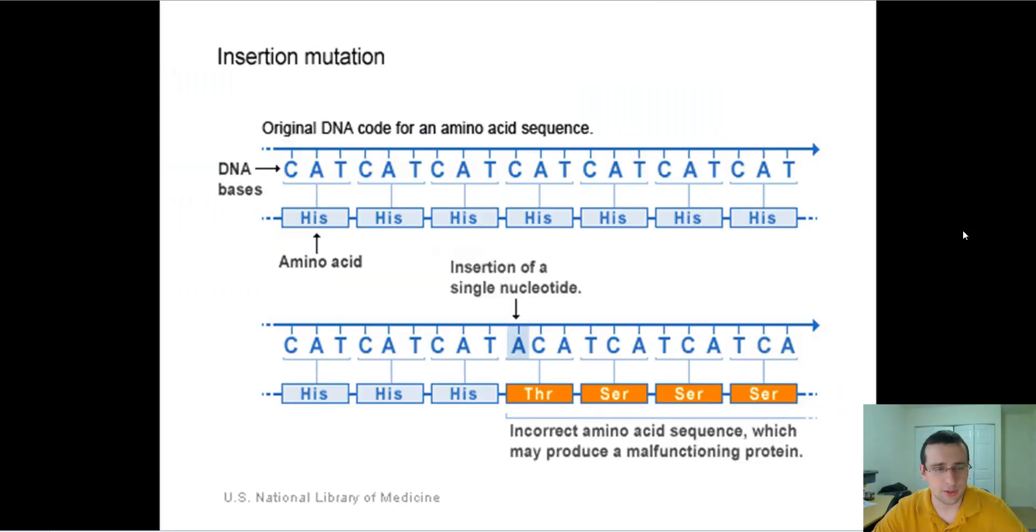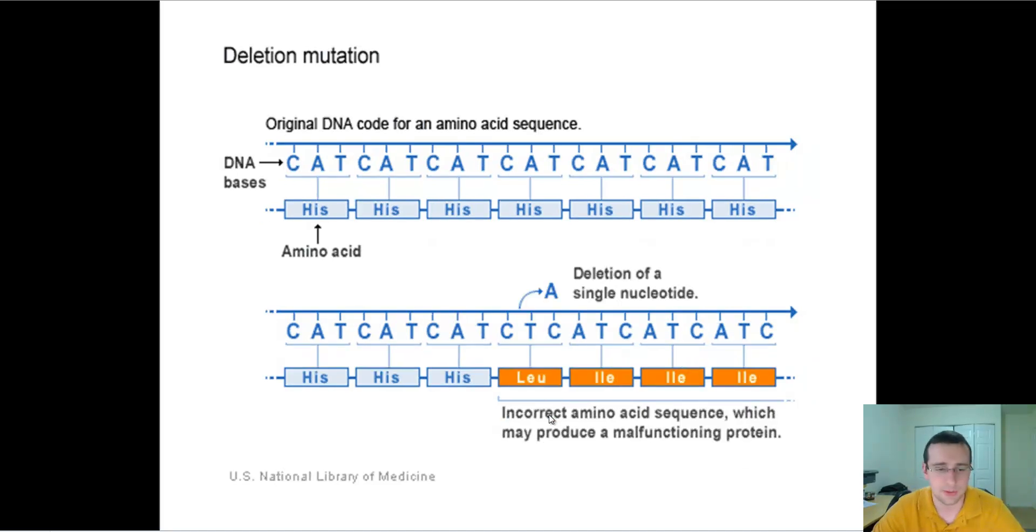There are also gene mutations. This is an insertion that they're showing over here which shifts the entire code to the right, so it's also called a frame shift mutation because you add an A and then the entire code shifts and therefore all the amino acids after that insertion will be different.